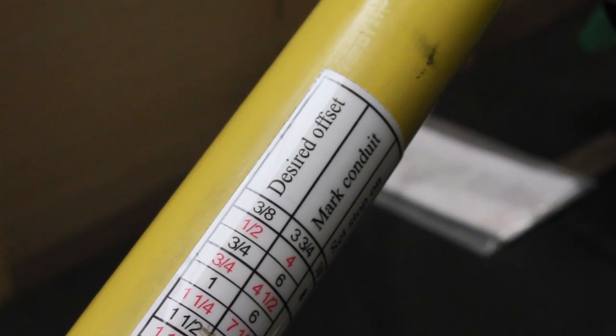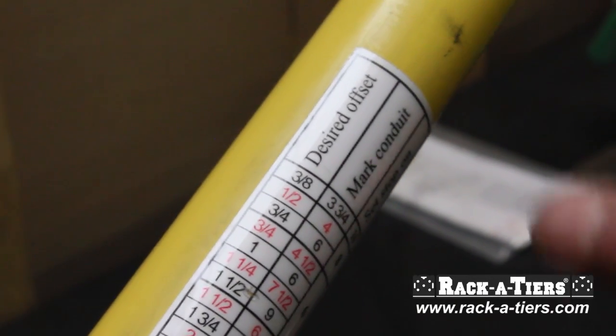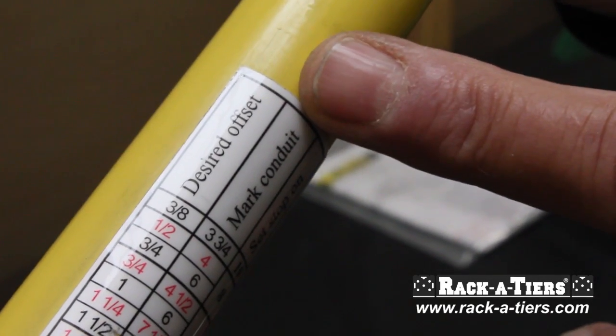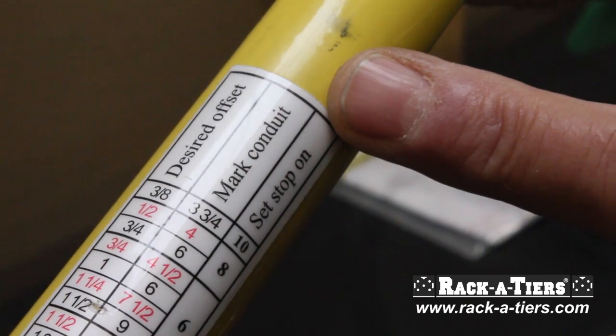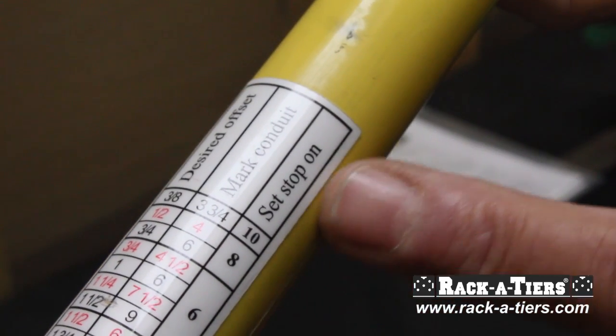On the Hoppy Bender, there's a label with three settings: the desired offset, mark the conduit, and set stop.